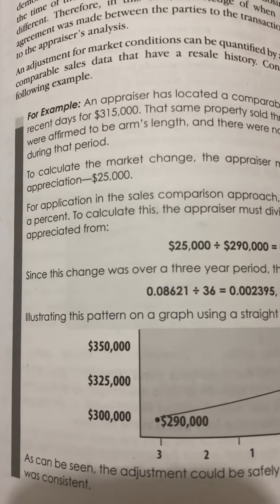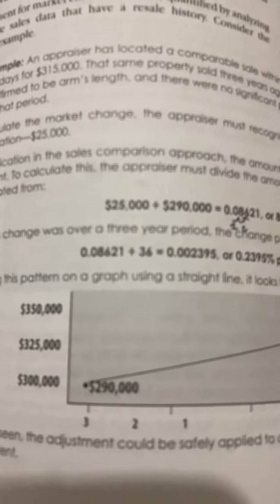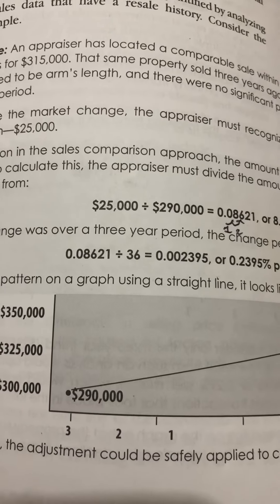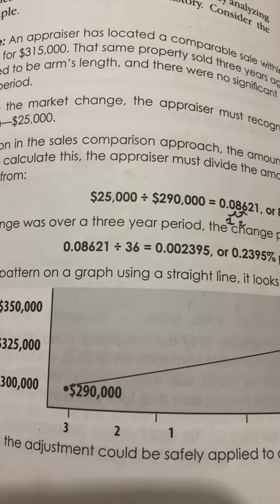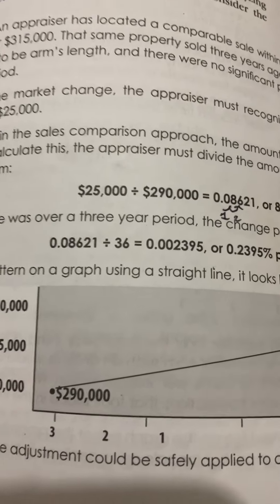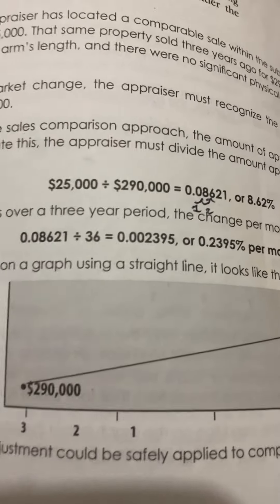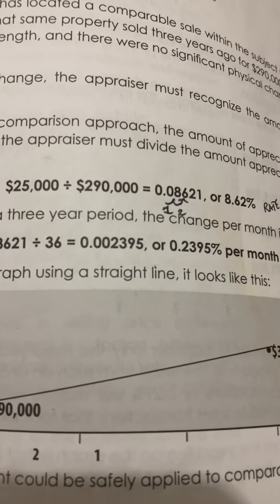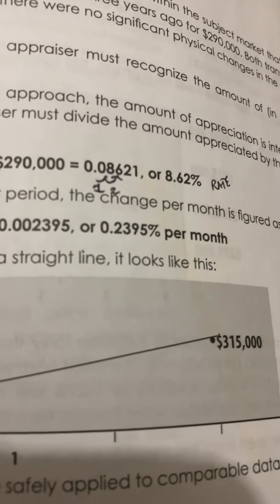Since this change was over a three-year period, the change per month is figured as follows: take 0.08621 and divide by 36 months, which equals 0.002395, or 0.2395% per month.